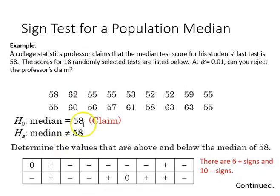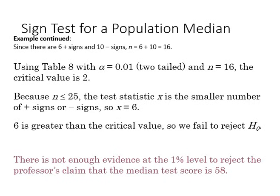So the null is that the median is 58. The alternative is that it is not. Because this is a not equal, we know that's going to be a two-tailed test. There are six plus signs and ten minus signs. N equals six plus ten, so that's 16.